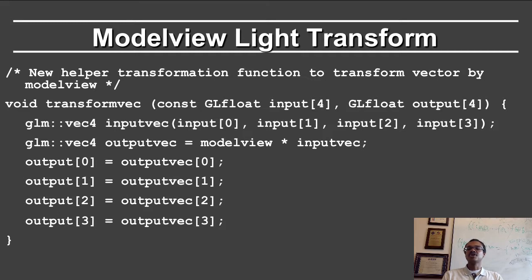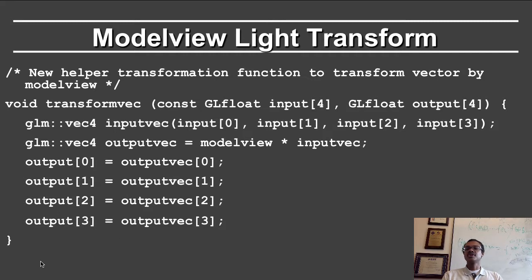The transform_vec helper function takes input variables X, Y, Z, W and output variables. It defines a GLM vector from the input, computes a GLM output vector as model view times the input vector, and sets the output values to the output vector. Essentially, it's just multiplying by the model view matrix to transform the lights appropriately.